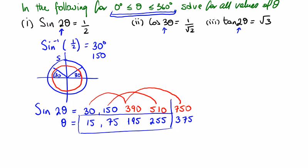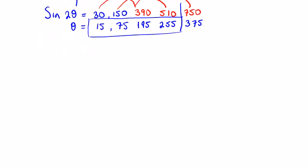For sine 2 theta is equal to a half. So you guys try now the second one. Pause the video and we'll look at the solutions now in a minute. Okay, cos 3 theta is equal to 1 over root 2. What angle gives the value of 1 over root 2 if you get the cos of it? 45.